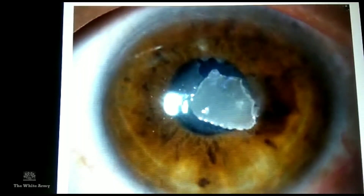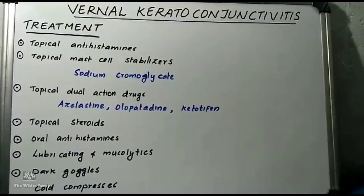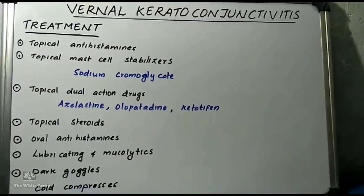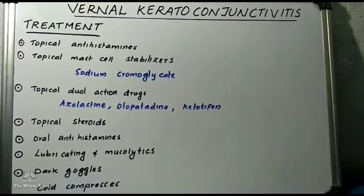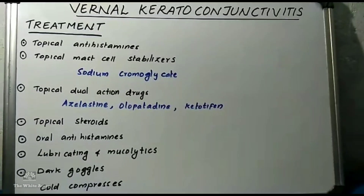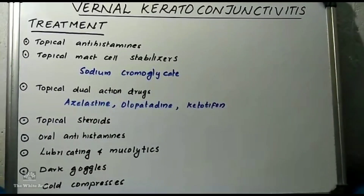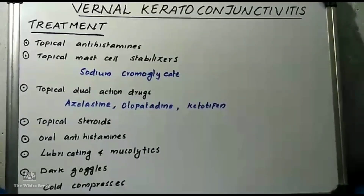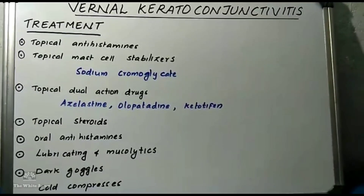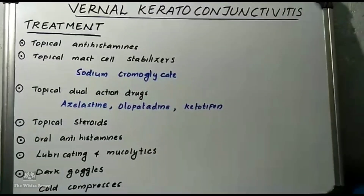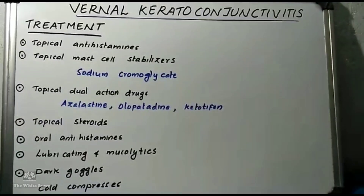This picture depicts the characteristic shield ulcer. Coming to treatment, topical and systemic anti-inflammatory therapy are used. Topical antihistamines or topical mast cell stabilizers like sodium cromoglycate are used. Nowadays, dual-action drugs like azelastine, olopatadine, and ketotifen are the preferred drugs. Topical steroids are usually added as initial therapy in acute exacerbations and tapered after the episode subsides. Oral antihistamines help relieve itching in severe cases. Topical mucolytics like acetylcysteine help in the treatment of early plaque formation. Artificial tears provide a soothing effect.